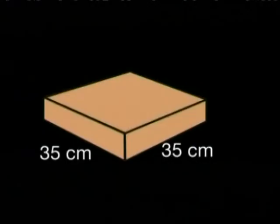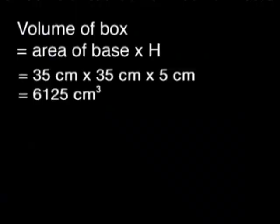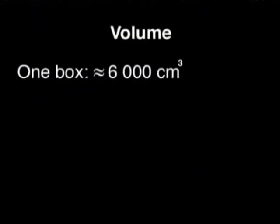Have a look at the shape of this pizza box. It has a square base of 35 centimeters and a height of five centimeters. Although I don't know what the volume of the pizza was that was in it, I did work out the volume of this pizza box. It is 6,125 cubic centimeters. That's just over 6,000 cubic centimeters.